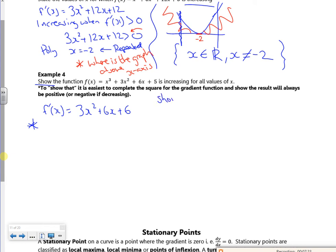So I want to show that the gradient graph is above the x-axis. And an easy way to do that is to use completing the square. I'm just going to pause it while I do completing the square.